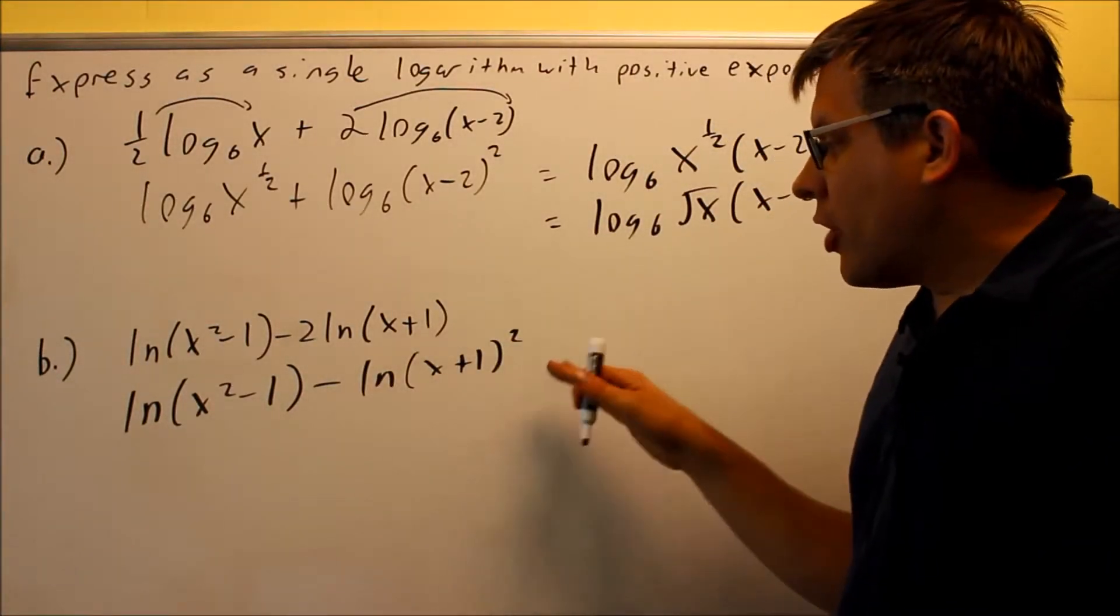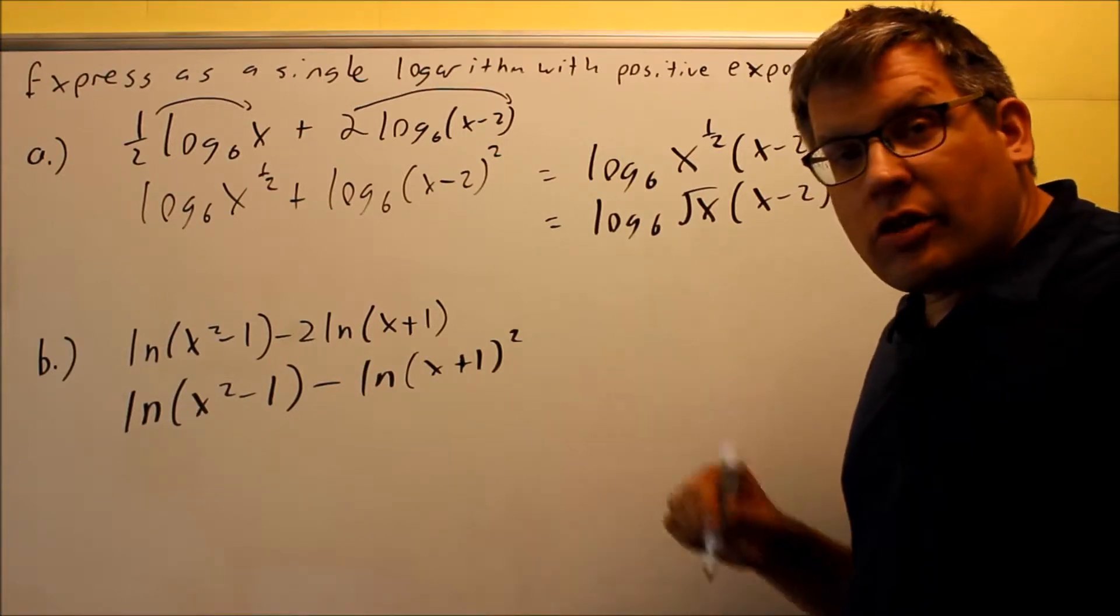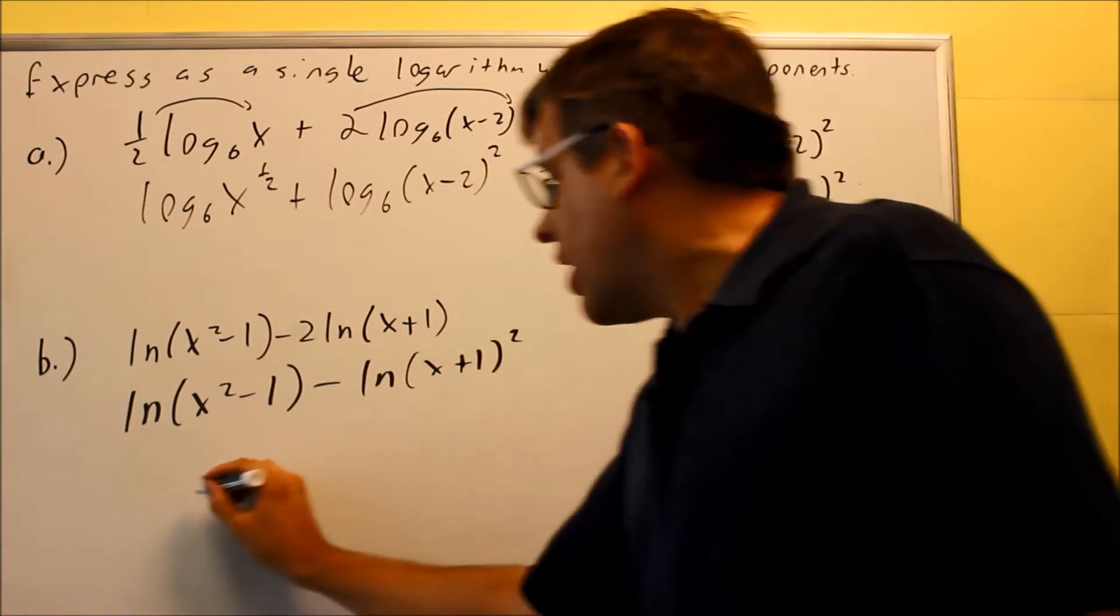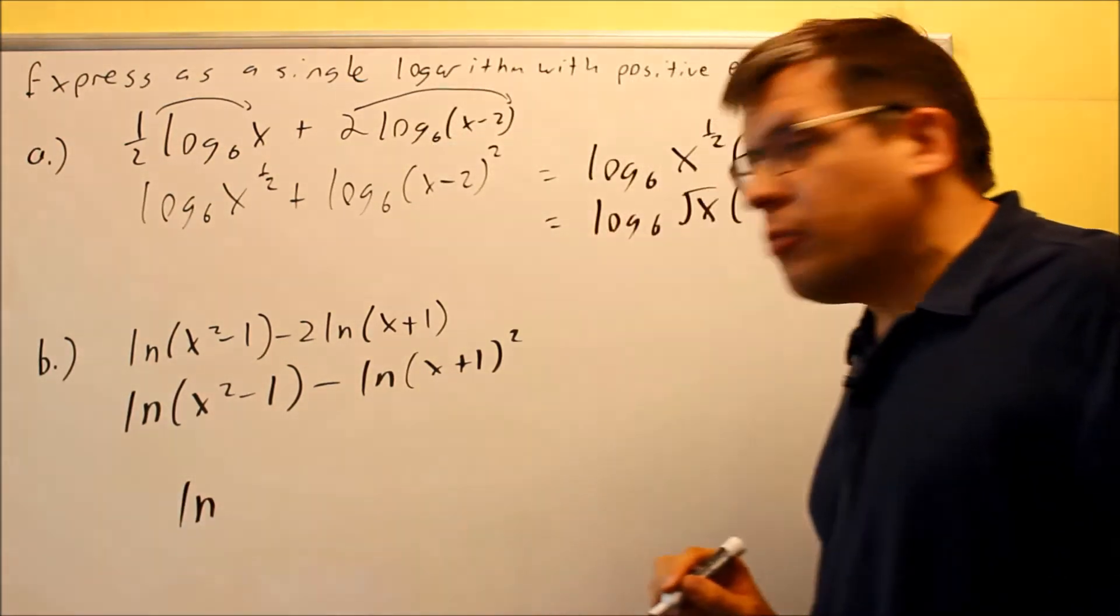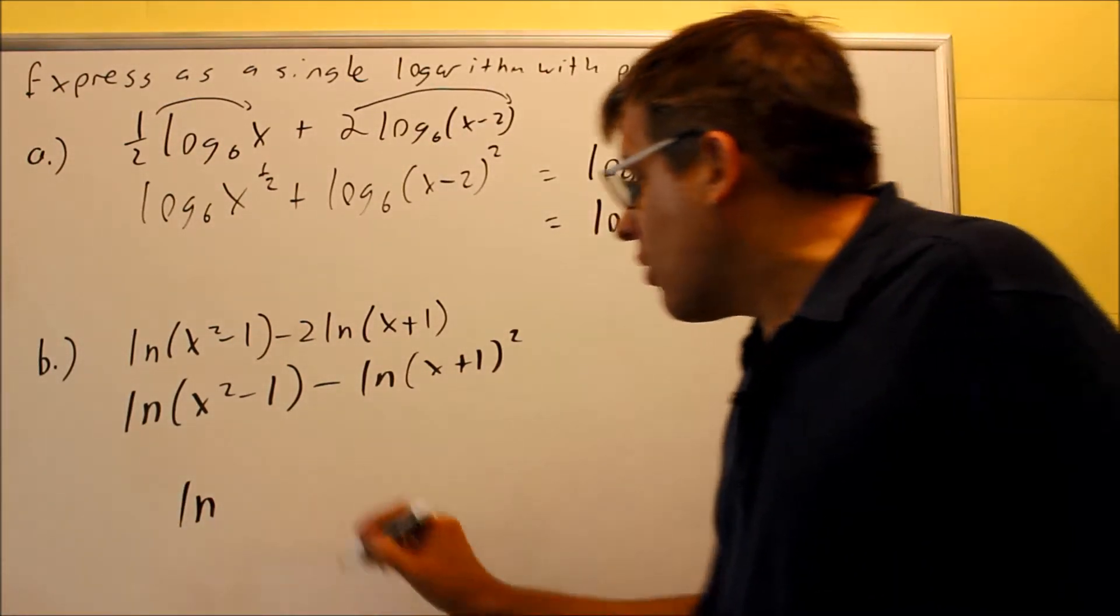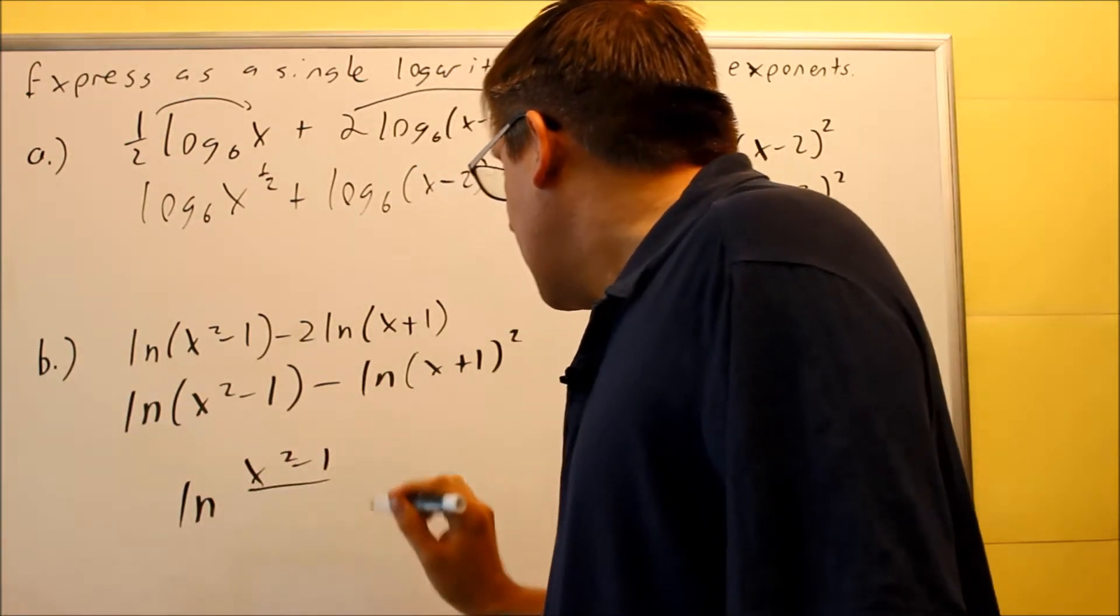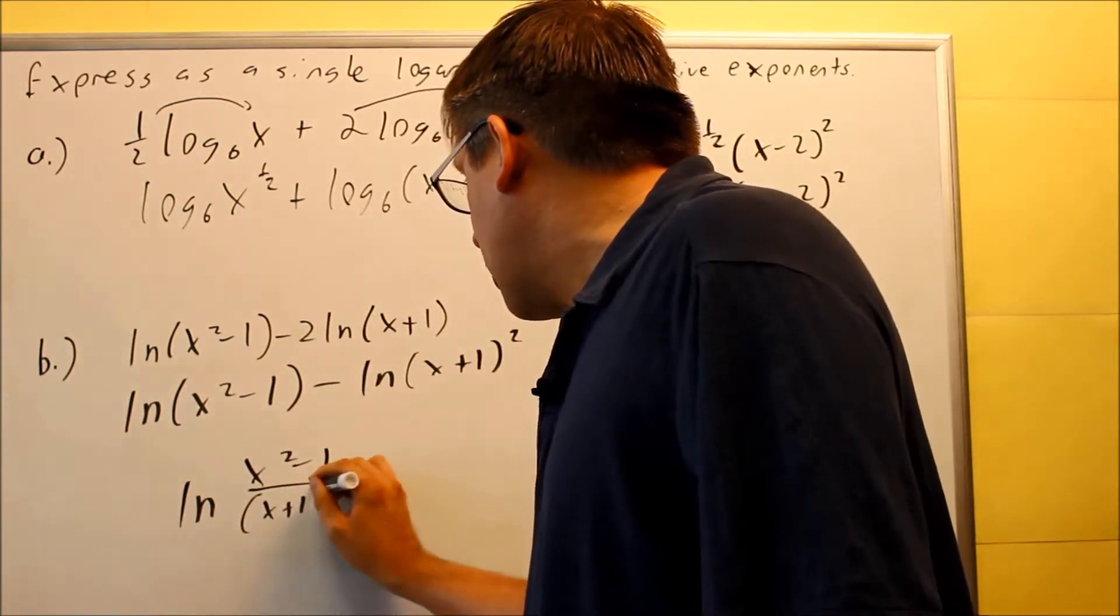Now that I have this, I'm ready now to put it together into a single log. So notice again, I have ln's here, which means that I'll have a single ln as my answer. ln would be a log base e, so I'm just using that one. We have the top one, x squared minus 1, on the bottom I have x plus 1 squared.